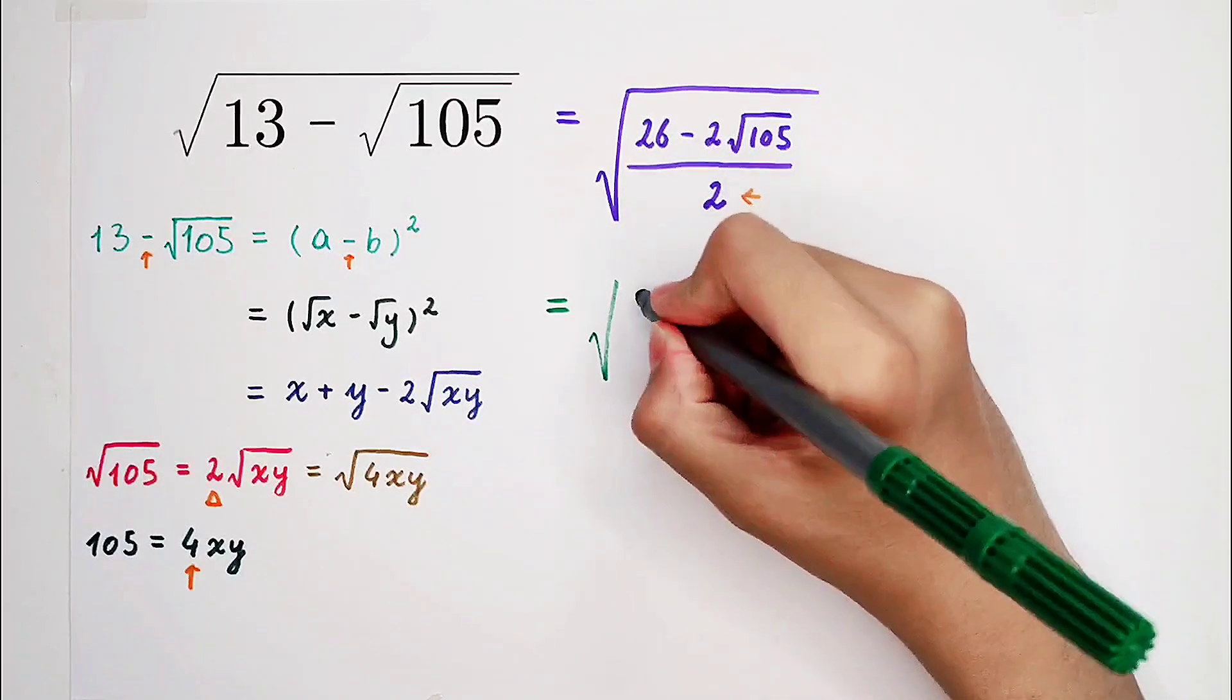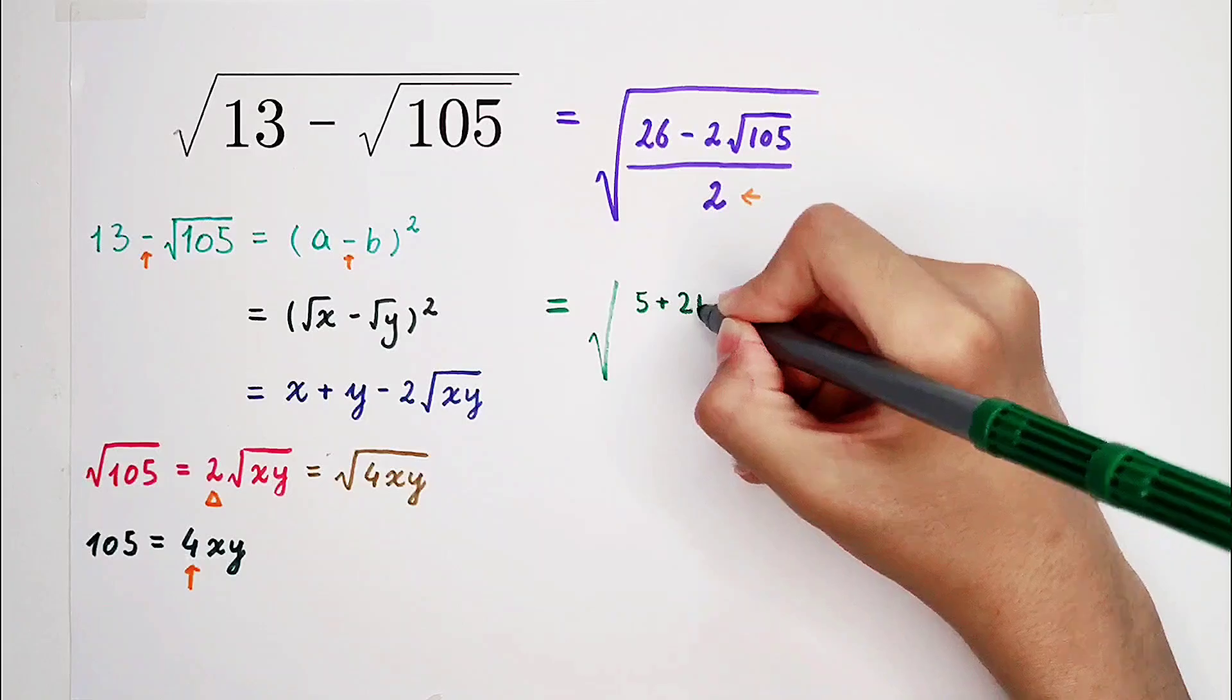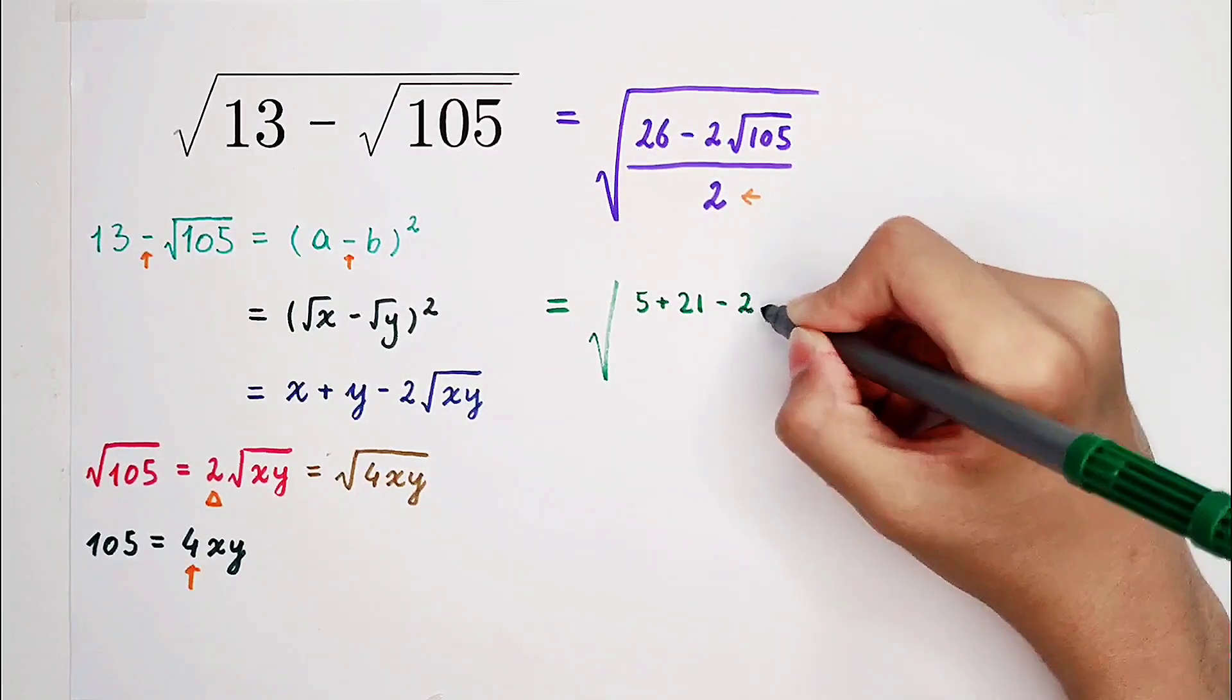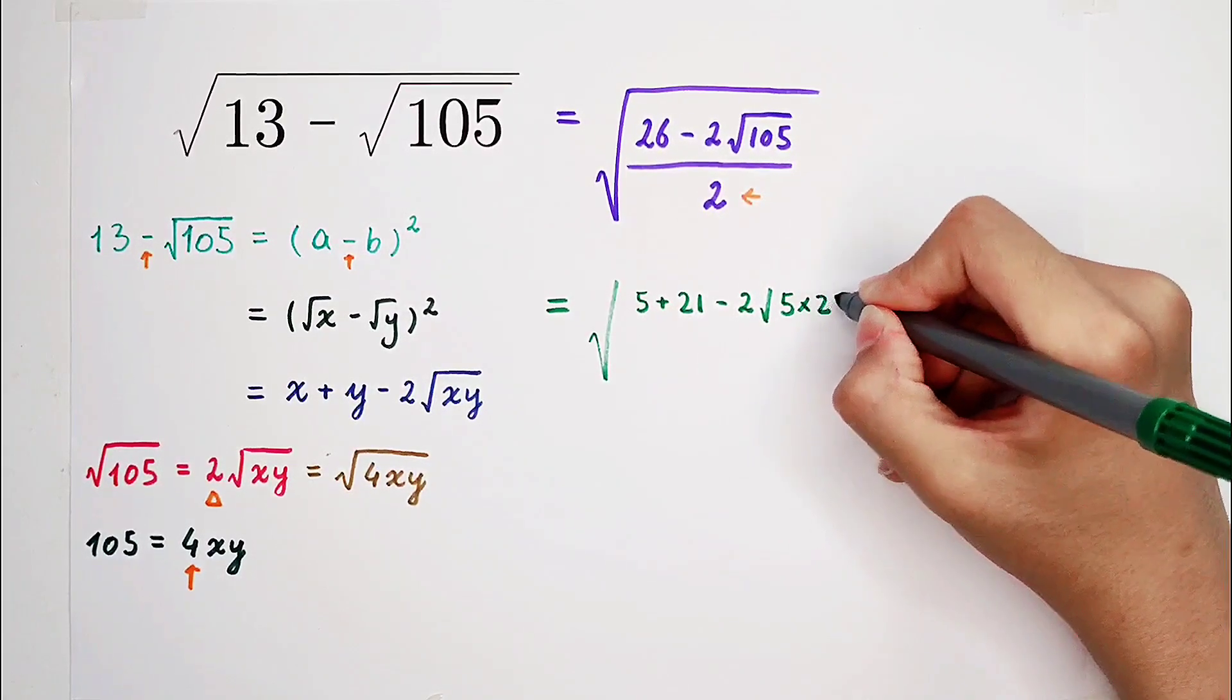26 can be written as 5 plus 21, and then minus 2 times 105 can be written as 5 times 21.